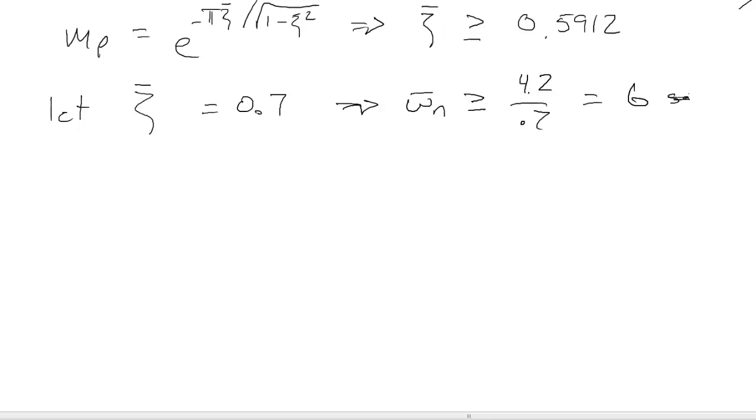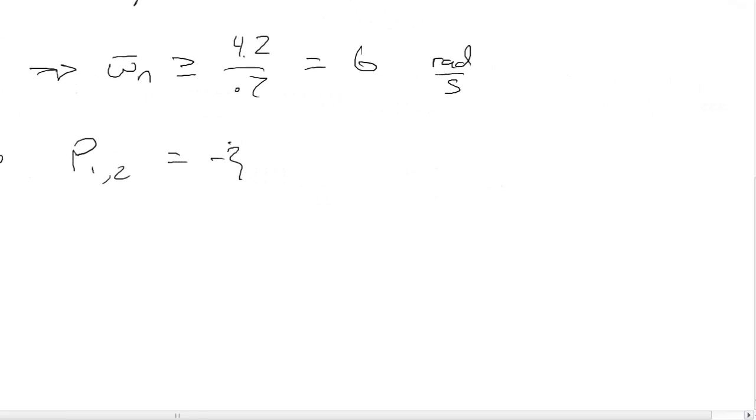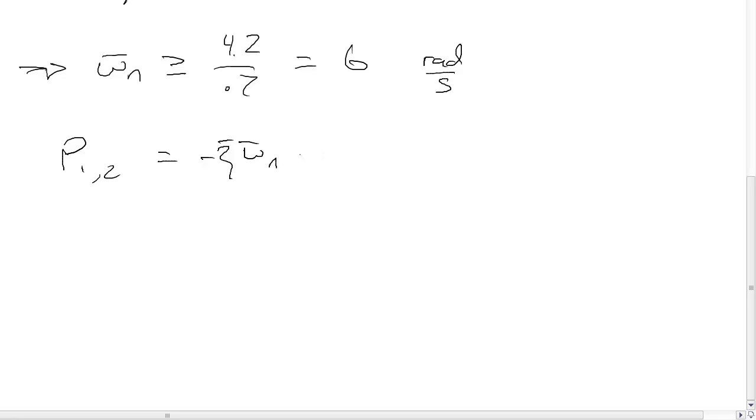That means we need poles at P1 and 2 equal to minus zeta bar omega n bar plus or minus j times omega n bar times the square root of 1 minus zeta bar squared, which gives us, after we multiply everything out, 4.2 plus or minus j times 4.2849.